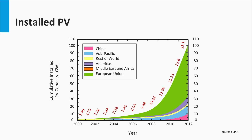The purple area reflects the PV capacity installed in North and South America. Orange corresponds to the Middle East and Africa, whereas yellow corresponds to the rest of the world. It is important to note that the total installed solar power has passed the 100 GW mark in 2012.